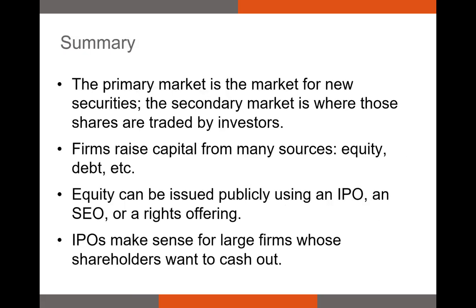Let's summarize. The primary market is the market for new securities, and the secondary market is where investors who own those securities go to sell them. Firms that raise capital can do so from many different sources — equity and debt were covered in this video. Equity can be issued to the public using an IPO or an SEO. IPOs make sense for large firms that want to expand for several reasons, and existing shareholders will eventually want to cash out, so it makes sense for the firm to go public to give those shareholders a larger market in which to sell their shares. Thank you.